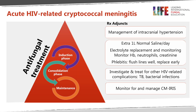To put antifungal therapy in the context of other important aspects of patient management: we need to address raised pressure, and take steps to reduce and monitor side effects of the drugs we're using. There is very good evidence that giving an extra liter of normal saline per day to patients while they're on amphotericin B reduces the renal impairment associated with that treatment.